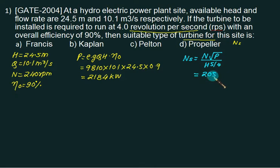It is known that for Francis turbine, the specific speed ranges from 60 to 300. So the given turbine must be the Francis turbine. Choice A is correct answer.